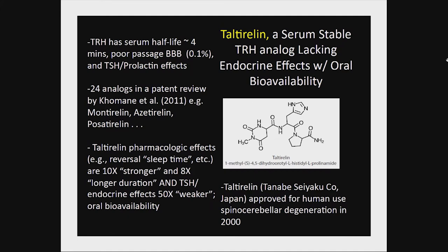One problem with TRH as a therapeutic agent is its very poor bioavailability: a short serum half-life of only 4 minutes, and less than 1% of systemically administered TRH makes it into the brain. For prolonged administration, there are also the endocrine effects — thyroid and prolactin effects. However, drug companies have tried to address this; a review of the patent literature in 2011 found 24 different analogs. There are agents like Taltirelin, Montirelin, Azetirelin, and Posatirelin. Taltirelin is orally bioavailable, approved in Japan for spinal cerebellar degeneration — 10 times stronger, 8 times longer, with 50-fold less endocrine effects.